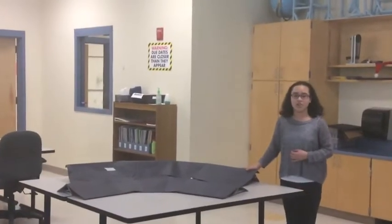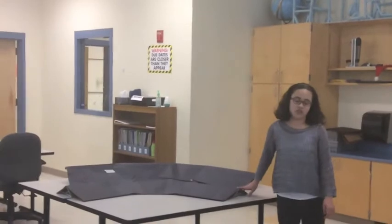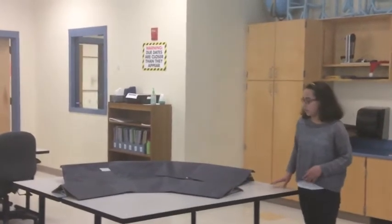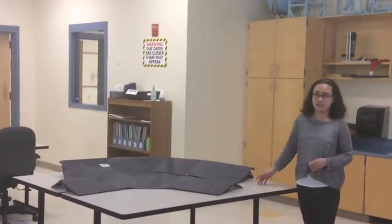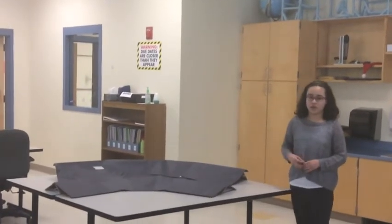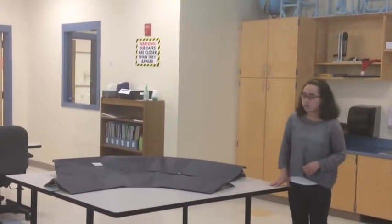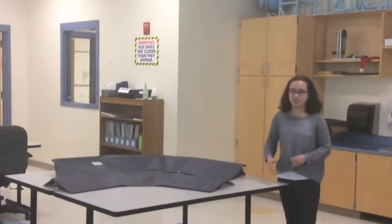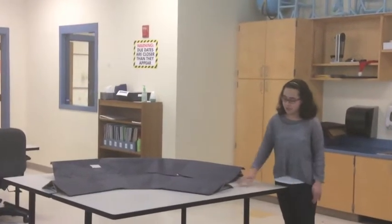This track has a 30 degree bank and this one has a 10 degree bank. We made these tracks out of cardboard for it to be the base, construction paper to provide friction more than the regular paper, hot glue to hold it together, and we used the protractor to measure the angle.